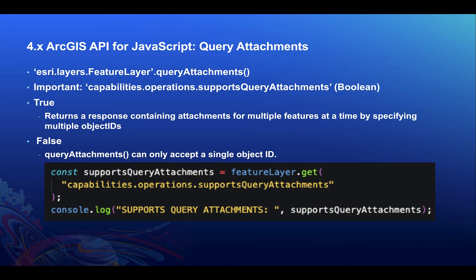If we look at the 4X JavaScript API in the feature layer class, there is a query attachments method that we can use to make a request to get attachments. When supports query attachments is true, the response will return attachments for multiple features at a time. If the value is false, then the response can only return attachments per one feature at a time. Supports query attachments will be true if the hosted feature service is at version 10.5 and greater. Otherwise this property will be false. This code snippet shows how to check if the property is true or false in the feature layer.